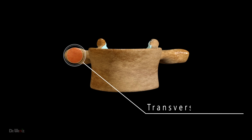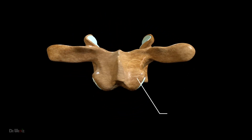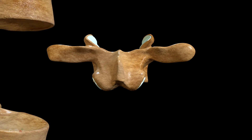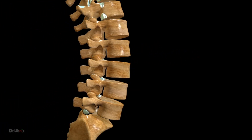The transverse process is a bony projection that extends from each side of the lumbar vertebra and provides attachment points for muscles and ligaments. The lamina is a thin flat bone that forms the posterior part of the vertebral arch, helping to protect the spinal cord. Overall, the lumbar vertebrae are a crucial component of the vertebral column, responsible for supporting the body's weight and allowing for movement and flexibility of the lower back.